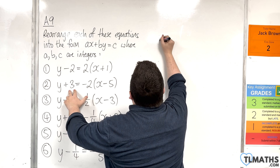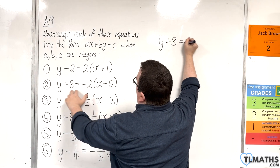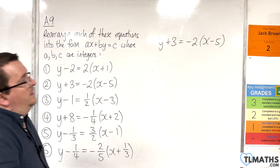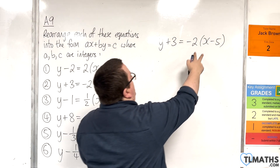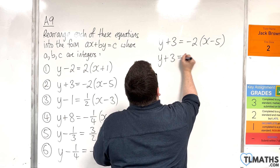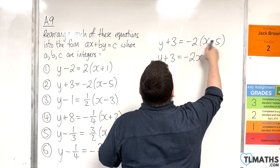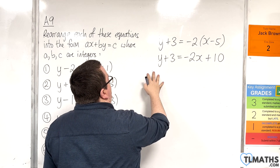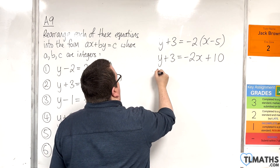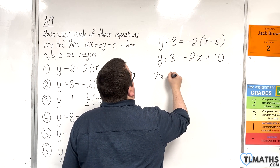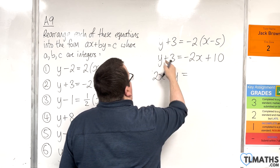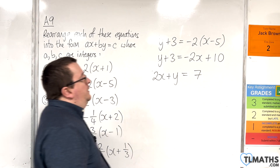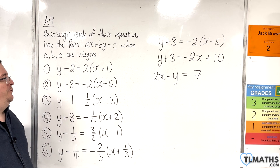For question 2: y plus 3 is equal to minus 2 lots of x take away 5. If we expand the bracket on the right hand side, y plus 3 is minus 2x. Minus 2 times minus 5 is plus 10. Now add 2x to both sides, leave the y where it is, subtract 3 from both sides. 10 take away 3 is 7, so 2x plus y equals 7 is in the required form.